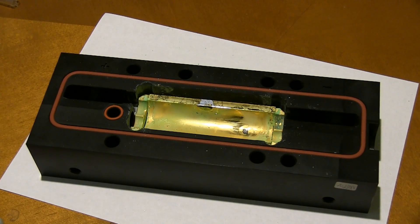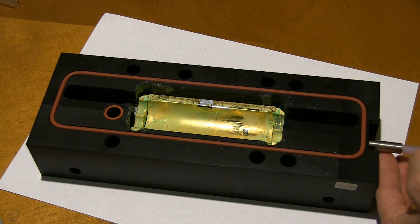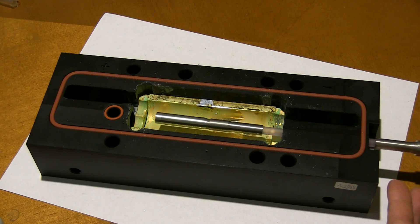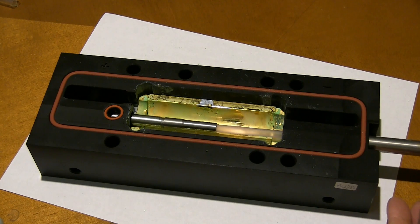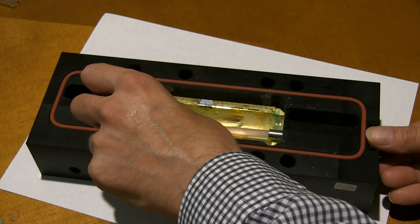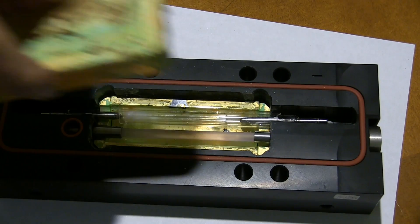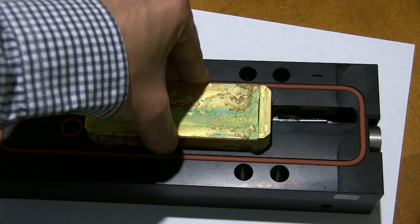This YAG rod would normally have a cooling jacket around it as well which water flows through it. I'm just going to insert this without the jacket so you can see it and get it in there. That's in there.